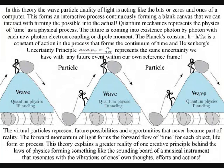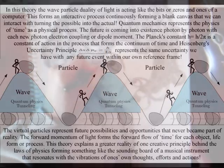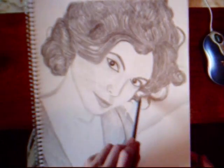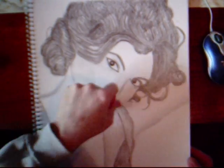In this theory we have free will because the wave particle duality of light is acting like the bits or zeros and ones of a computer. This forms an interactive process continuously forming a blank canvas that we can interact with, turning the possible into the actual.